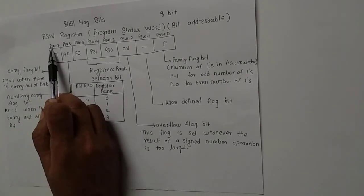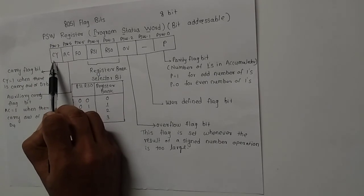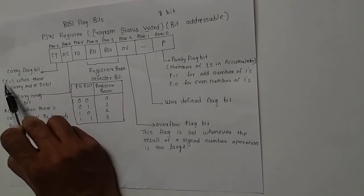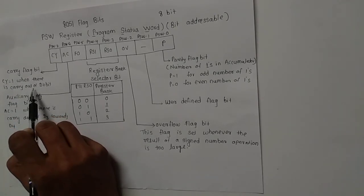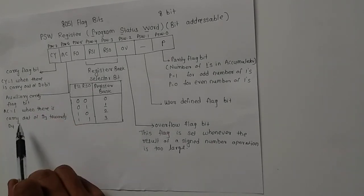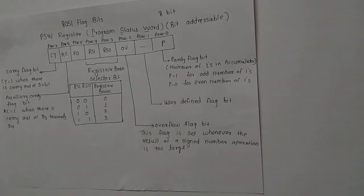The last bit, PSW.7, is the carry flag bit. When this carry flag bit is 1, it means there is a carry out of the D7 bit. So this is the bit structure and explanation about the PSW register.